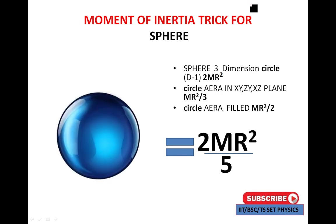Next: sphere. A sphere is a three-dimensional circle, so D minus 1 gives 2MR². Its circular area is in XY, ZY, and ZX planes — three planes — giving MR² by 3. The circular area is filled, giving MR² by 2. Combining: 2MR² divided by (3 plus 2) equals 2MR² / 5. So the moment of inertia of a solid sphere is 2MR² / 5.